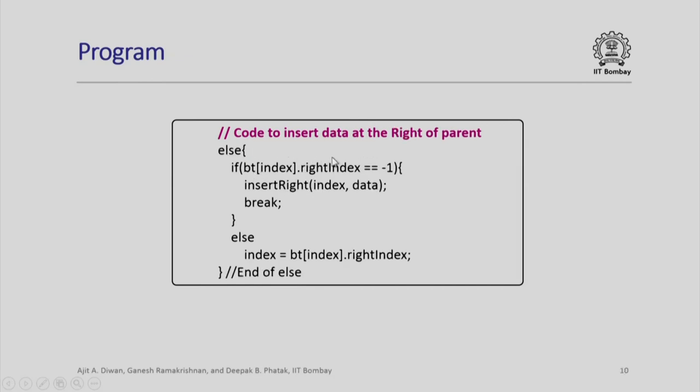Insertion of a new data element to the right of parent is exactly written in the same fashion. If that is not less, then I got a value which is greater than the parent and therefore I have to look at the right. If on the right hand side there is no node, that means the index is minus 1, I will simply insert it. Otherwise, I will say index is set to right index and continue looking further to the right of that tree to find out what is the next right position.